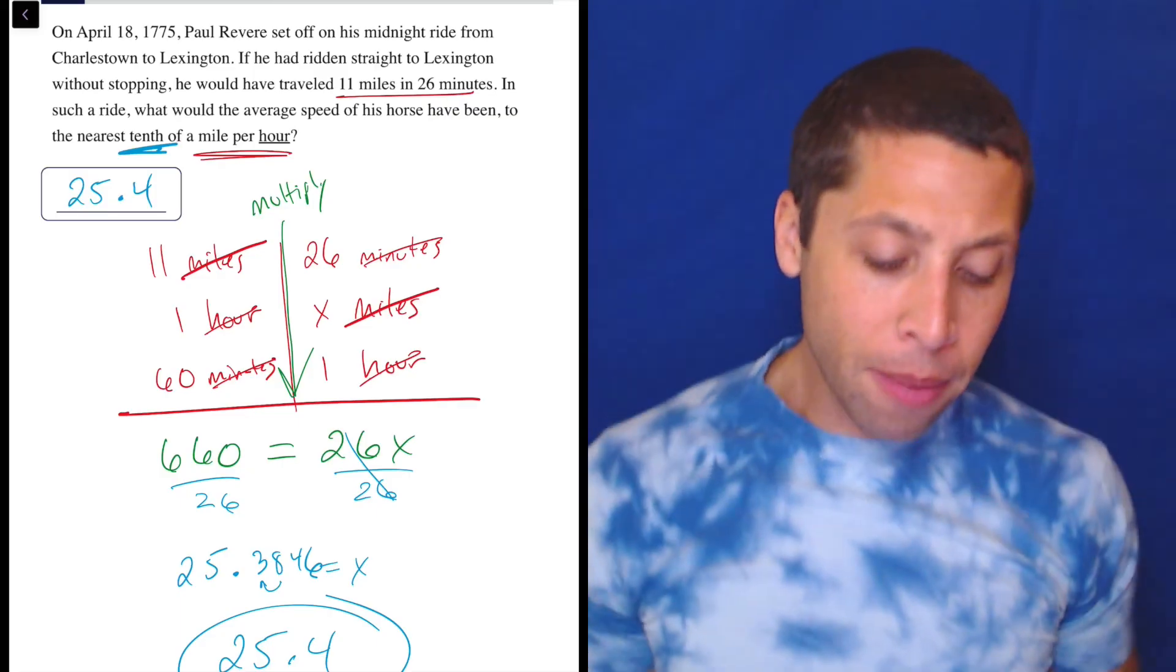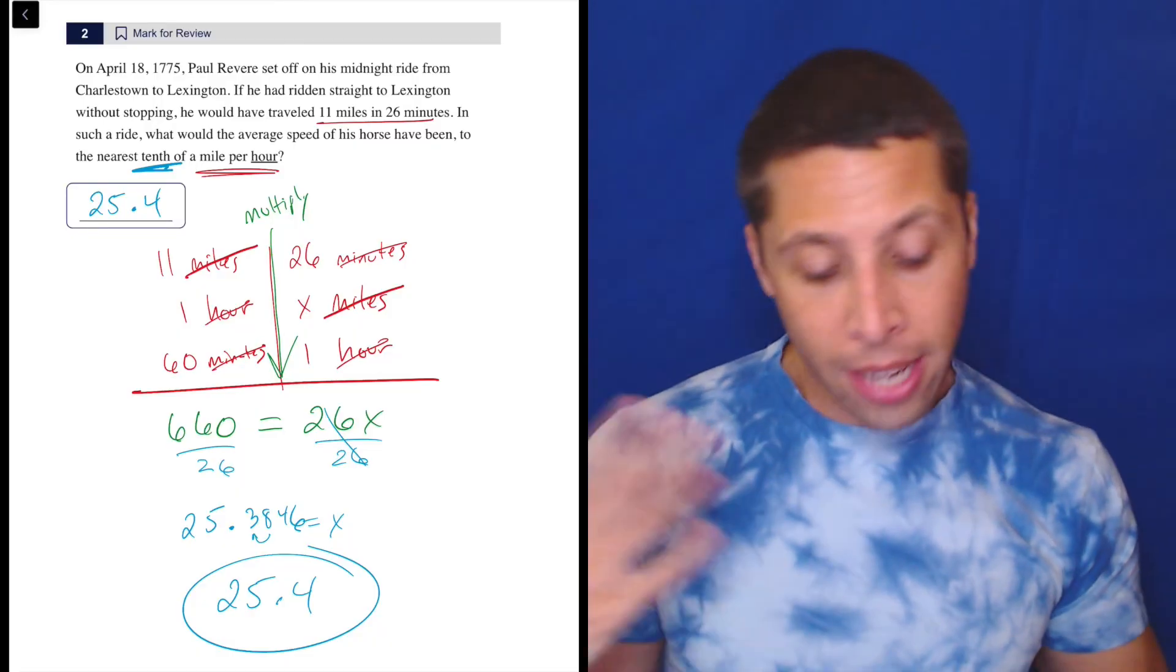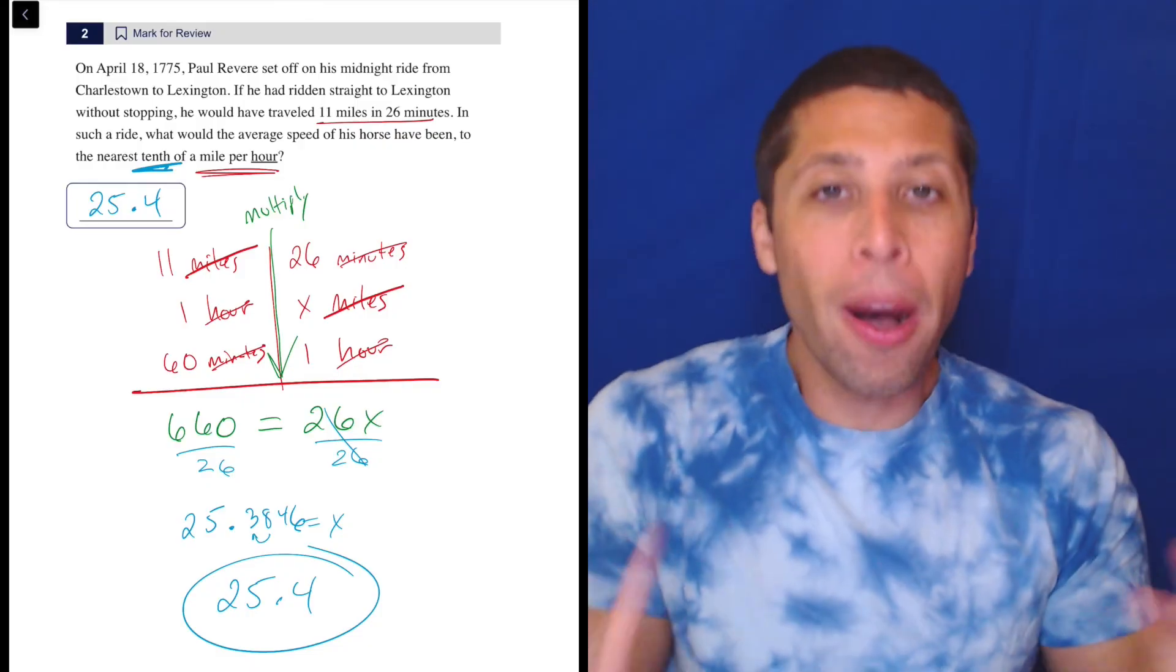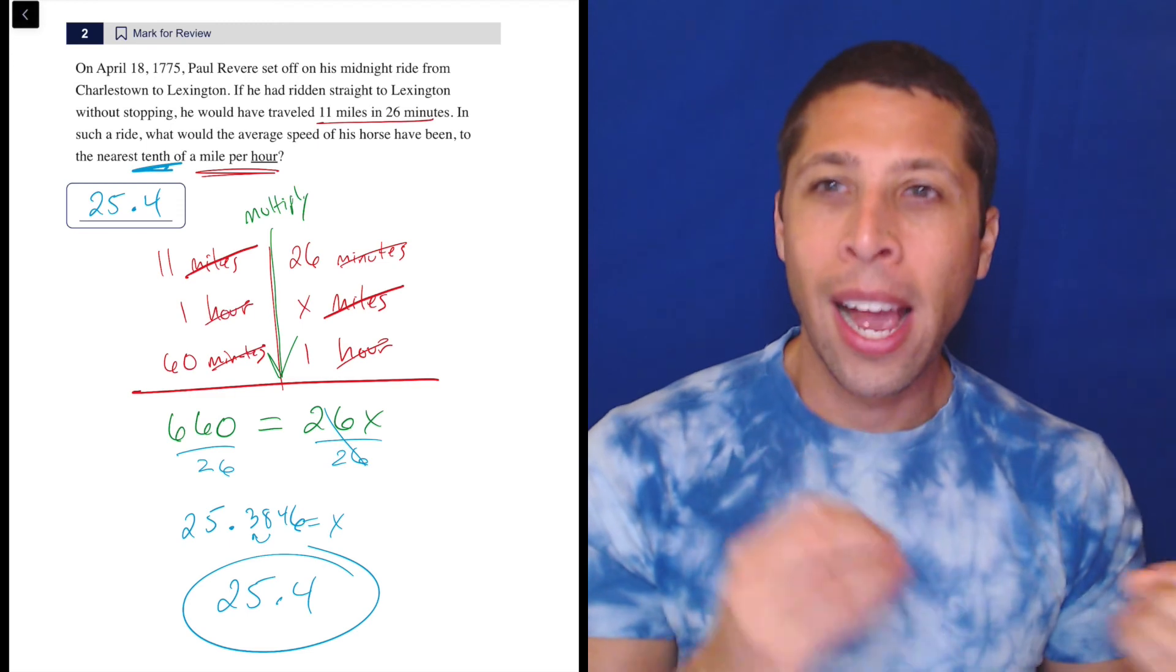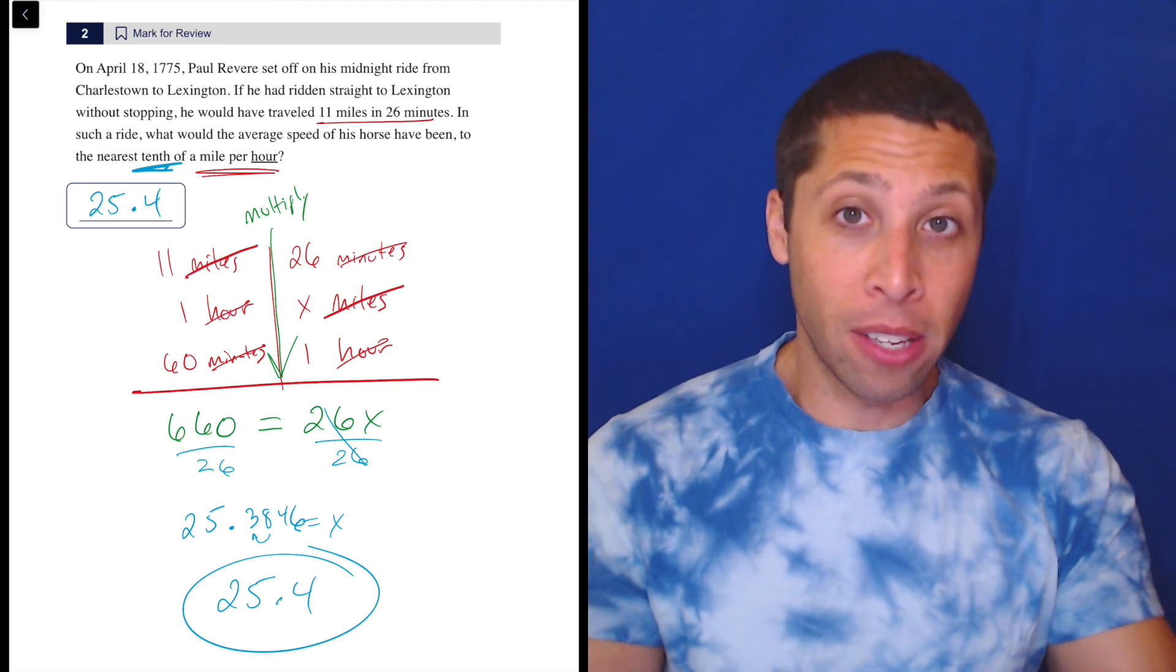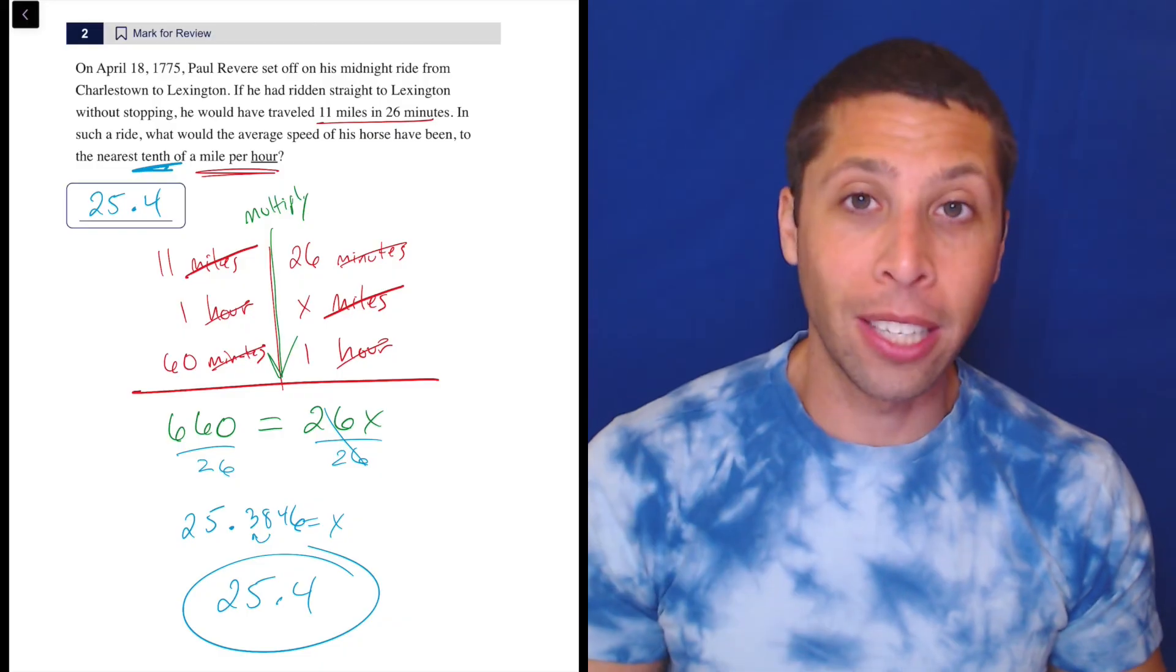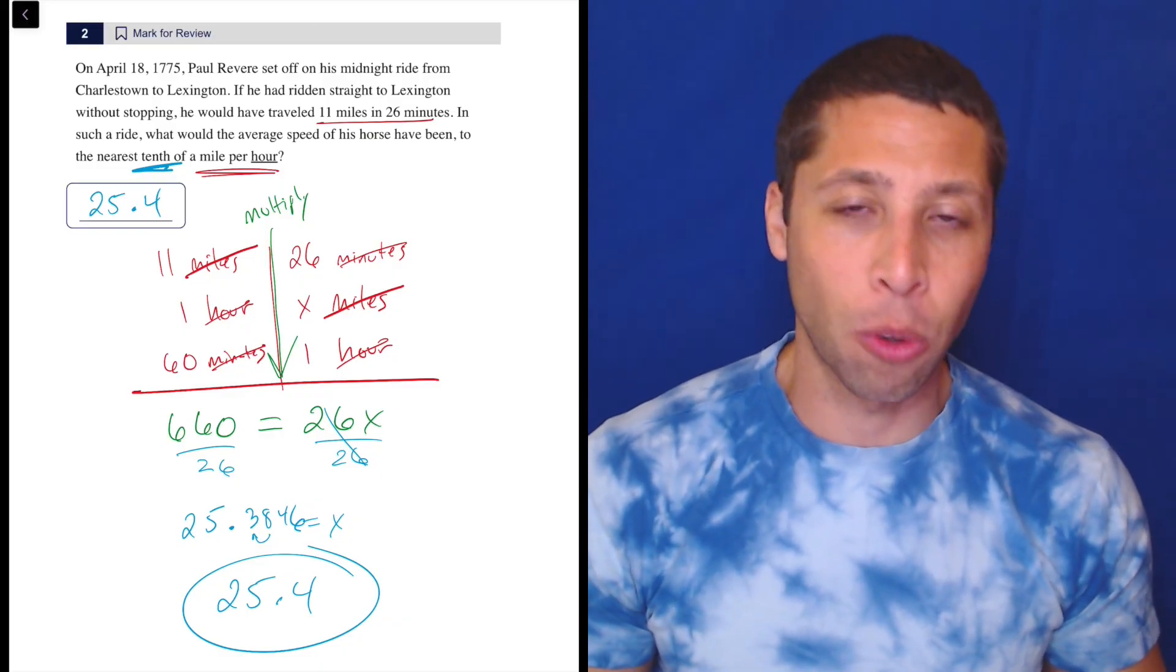So yeah, not so bad. I mean, question one in the set had a lot more conversions, but this one only really has one. And yeah, there are ways to convert 26 minutes to a number of hours beforehand, but why bother, right? Why treat each individual unit conversion question as a different kind of problem based on the units they give you? If you use this table method, no matter what they give you, you're following the same pattern every time. So definitely stick to it. It really keeps you organized and prevents any careless mistakes or trap answers.